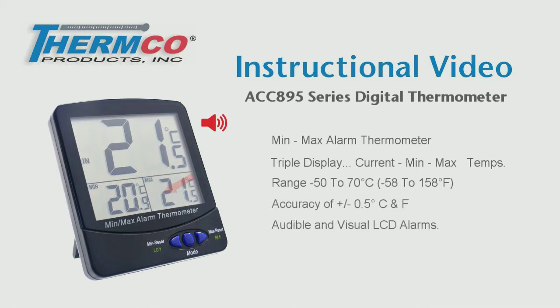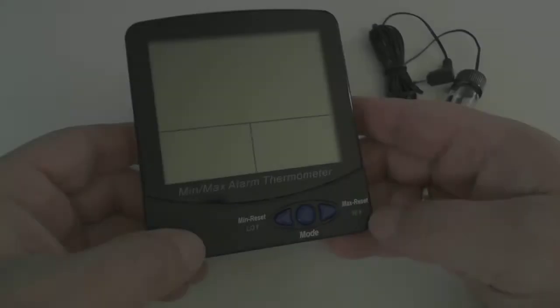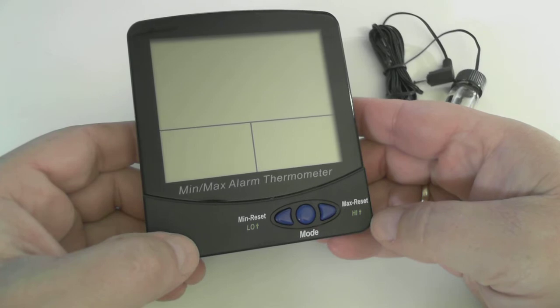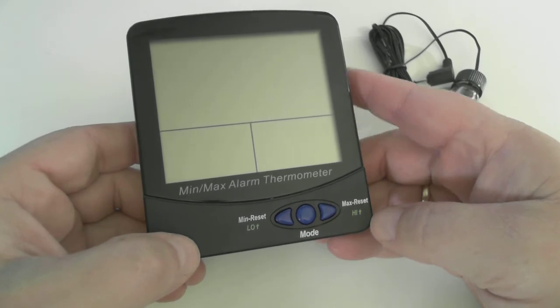This model has audible and visual LCD alarms with programmable low and high alarm set points. Let's do a quick overview of the ACC 895.